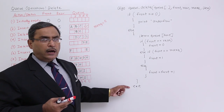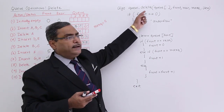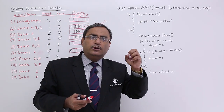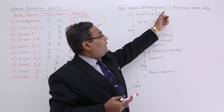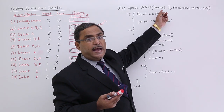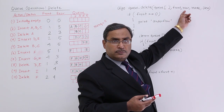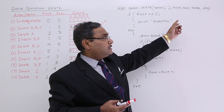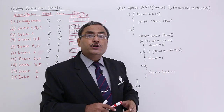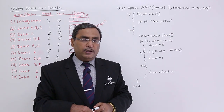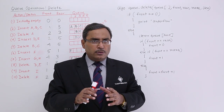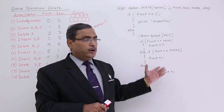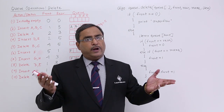The full code has been written under the algorithm qdelete. The algorithm name should be very purposeful — qdelete means deletion operation on a queue. Here you are passing the queue array, front, rear, and max_queue, because max_queue has been used. The item is the output argument, because after deletion I know the value which has got deleted. This is my algorithm — I discuss the logic so you can write your programs accordingly.